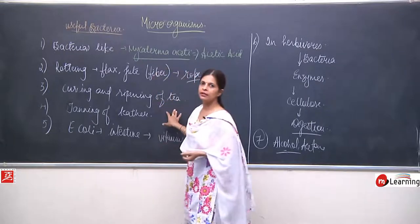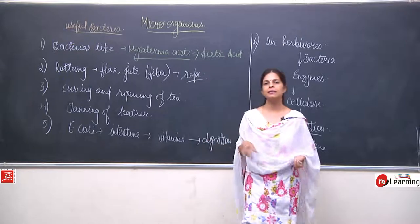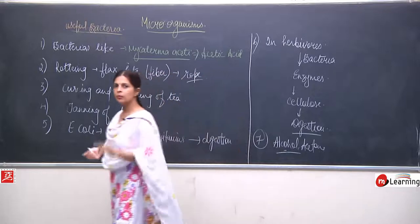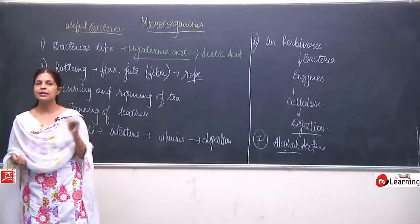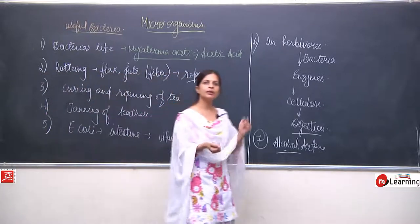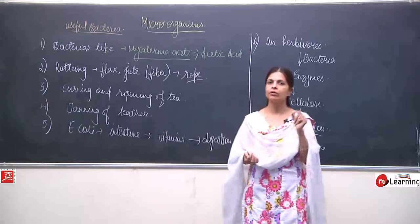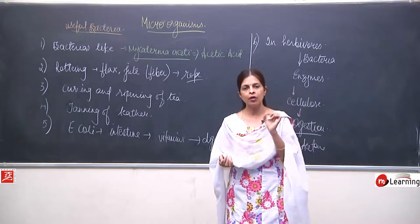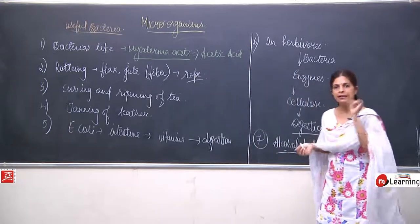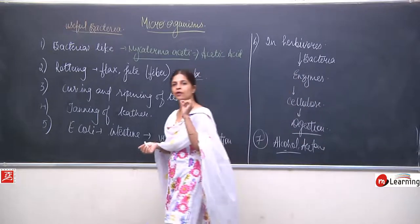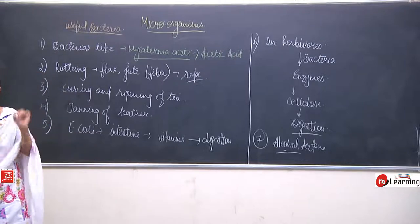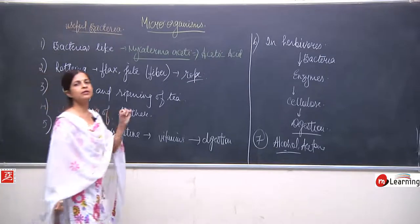Tanning of leather is another use. E. coli is present in the intestine and is responsible for producing certain vitamins, which are responsible for proper digestion. In herbivores, certain bacteria are present in the intestine — these bacteria secrete certain enzymes, and these enzymes work upon the cellulose, helping it get digested.